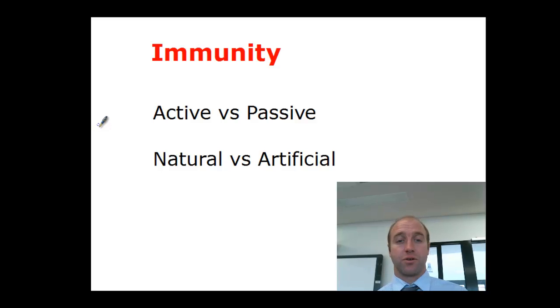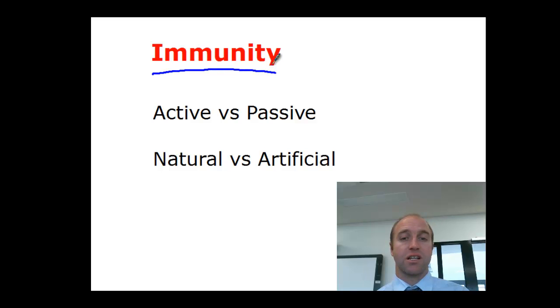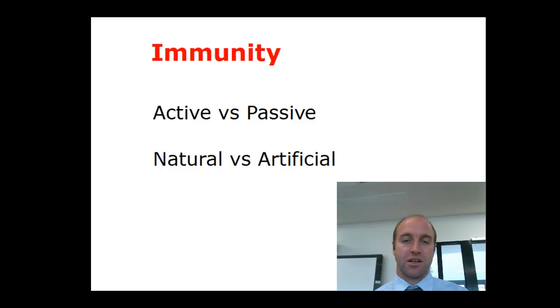Let's quickly have a look at some different sorts of immunity. First off, let's just consider what the term immunity means. Immunity is our ability to prevent ourselves from getting particular types of diseases.